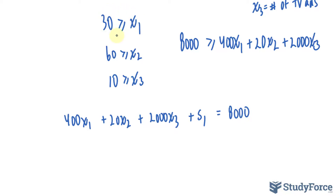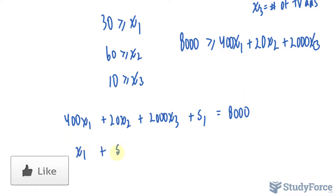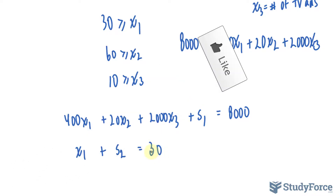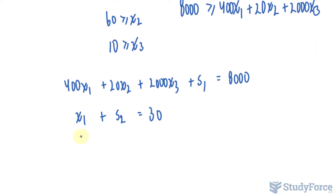To make each constraint into an equation, introduce one slack variable per constraint. X sub 1 plus S sub 2 equals 30. It doesn't matter whether you put the constant on the left or right — I prefer to put it at the end. X sub 2 plus S sub 3 equals 60. And X sub 3 plus S sub 4 equals 10.